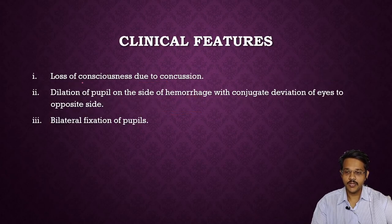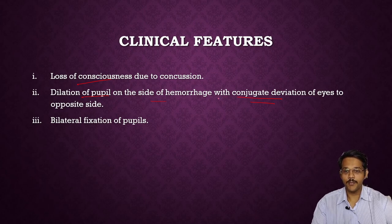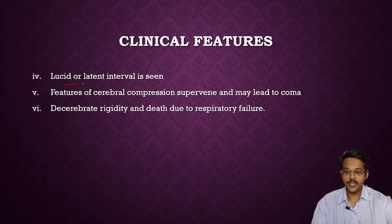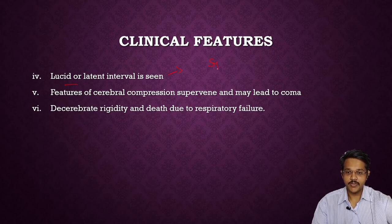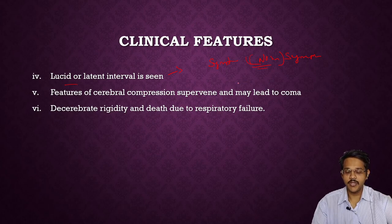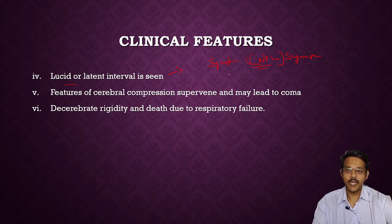Clinical features of extradural hemorrhage: first, there is loss of consciousness due to concussion. Then there is dilatation of pupils on the side of hemorrhage and conjugate deviation of the eyes on the opposite side; sometimes bilateral fixation of pupils. Then there is lucid interval — a symptom-free period between two symptomatic periods, a gap where no symptoms occur. This is called the lucid interval and is very difficult to ascertain.